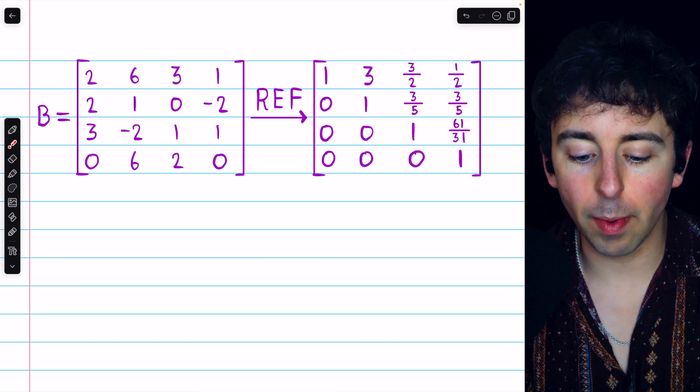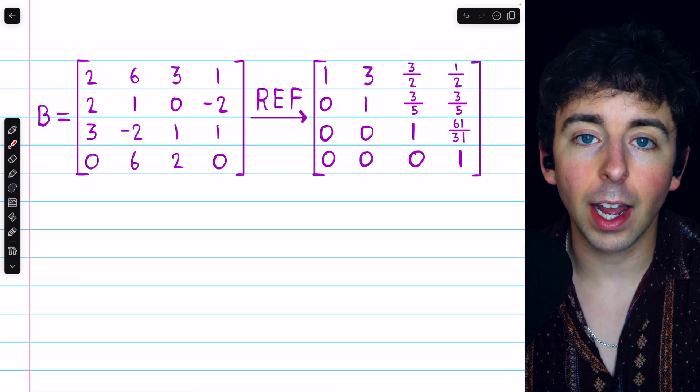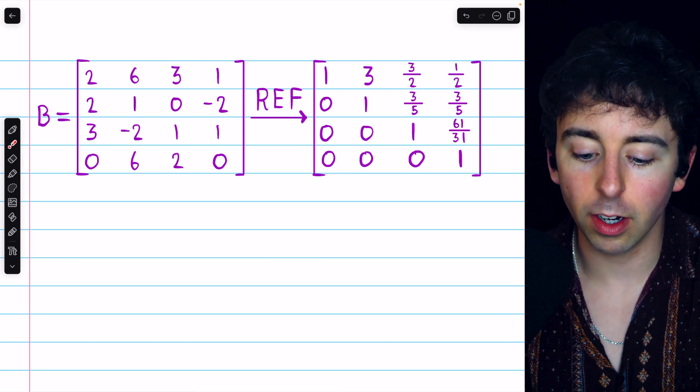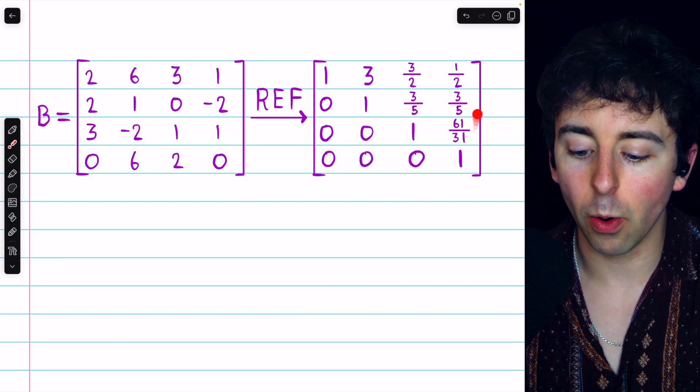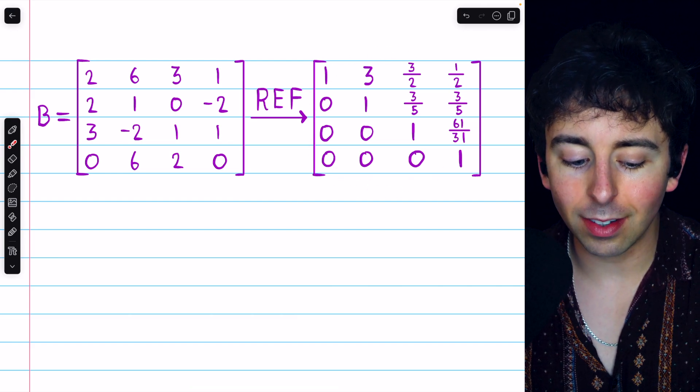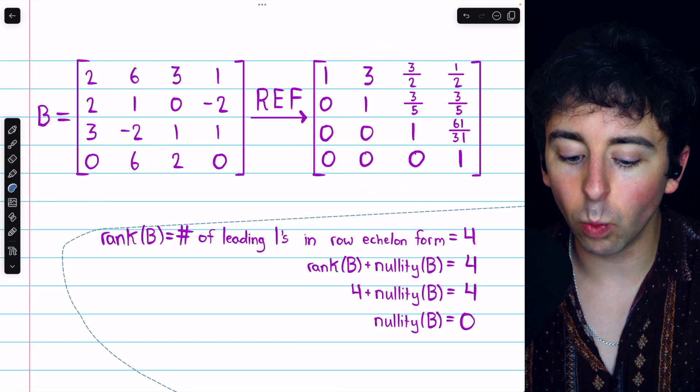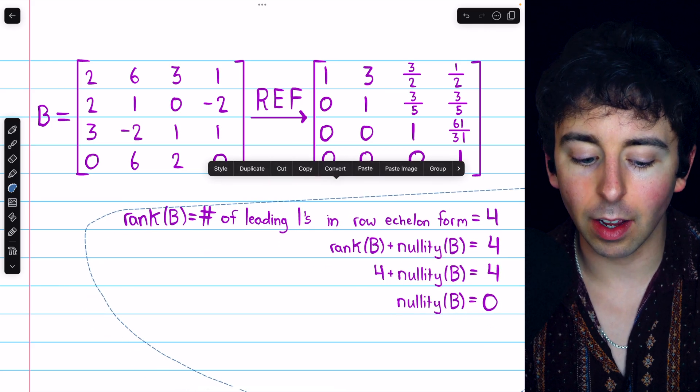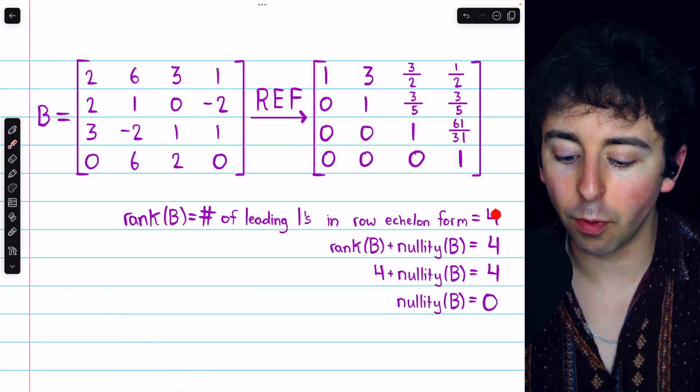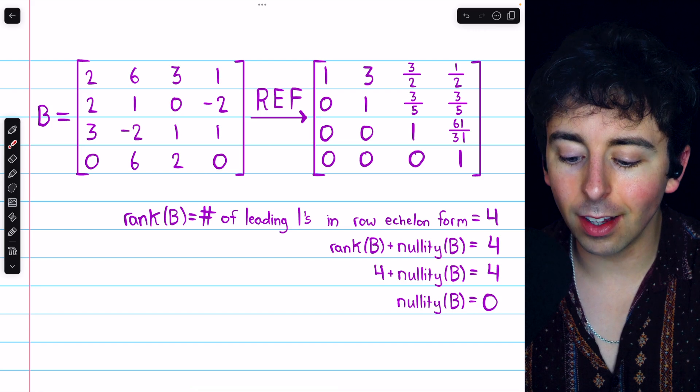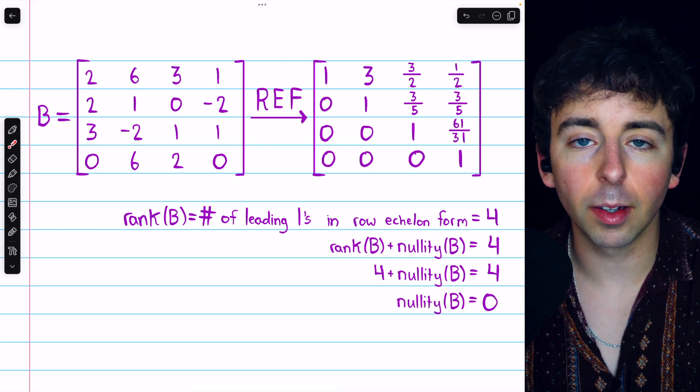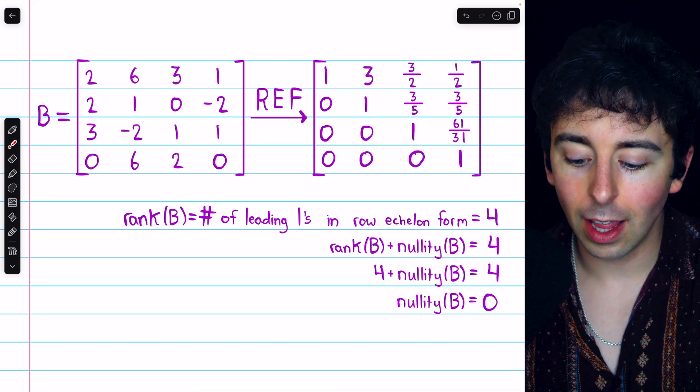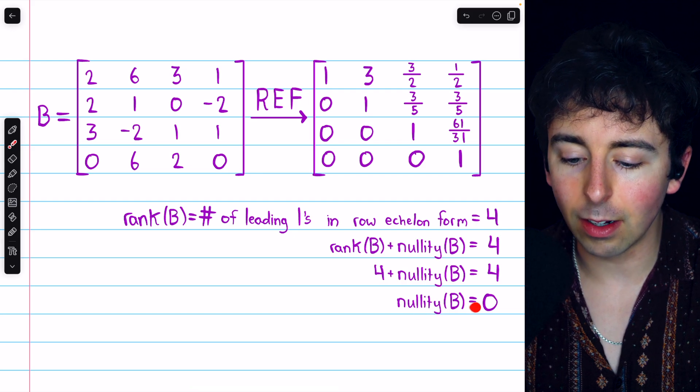We complete a similar procedure for matrix B. You can verify that if we perform Gaussian elimination, we arrive at this row echelon form, and we see that there are four leading ones, hence the rank of the matrix B is four. The rank plus the nullity must equal the number of columns, which is also four, thus the nullity must equal zero.